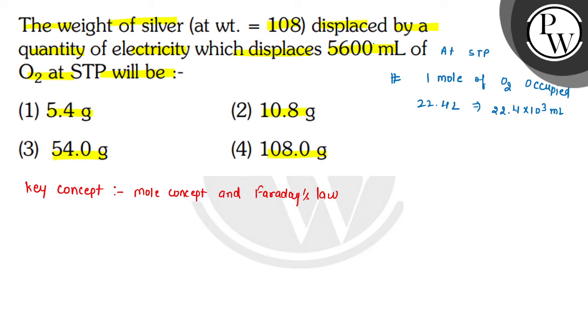So we have 5600 mL. We can calculate the number of moles. Number of moles of O2 equals 5600 divided by 22400, which equals 1/4. Now we have 1/4 moles of O2.